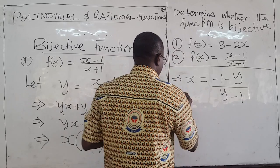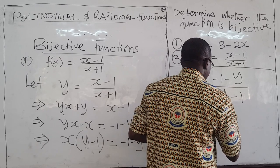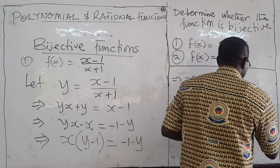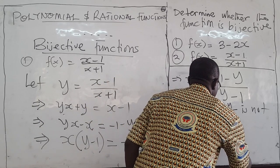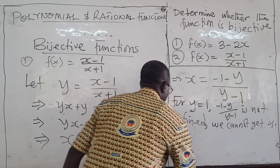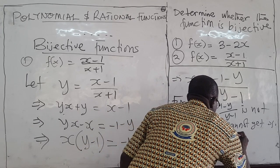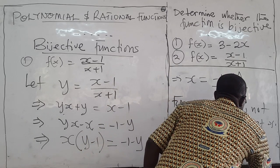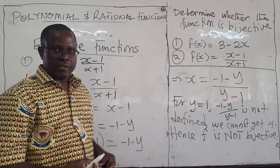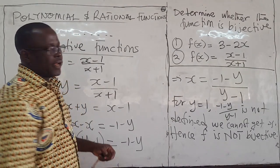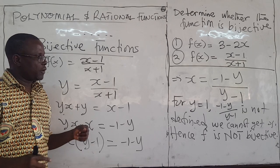Since we cannot get an x for every y, f is not surjective. Therefore we conclude that f is one-to-one, but it is not surjective — and therefore it is not bijective. That brings us to the end of bijective functions. Next we'll look at the inverse of a function and the composition of functions. Thank you.